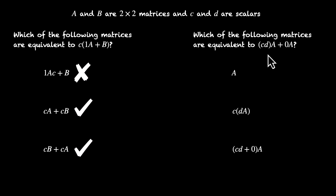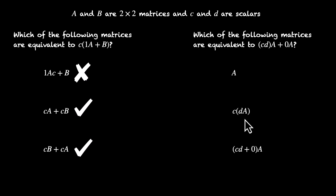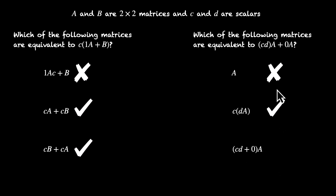Let's look at the second problem: CD times A plus 0 times A. Now 0 times any matrix will be the zero matrix of the same order. So this is a 2 by 2 zero matrix, and we have CD times A. The answer should be CD times A, and C times DA also works — both are correct by the associative property. The option of just A is incorrect. What about (CD plus 0) times A? Yes, you can do that — CD and 0 are both scalars, and CD plus 0 times A equals CD times A plus 0 times A by the distributive property, so this also works.